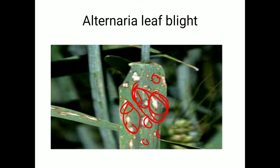Regarding perpetuation, the primary source of infection is infected seeds or mycelium present in the seeds, and the secondary source of infection is through wind. For control, perform hot water treatment by treating seeds with hot water at 52 degrees Celsius for 10 minutes, or spray the crop with Mancozeb at 0.2% at regular intervals.